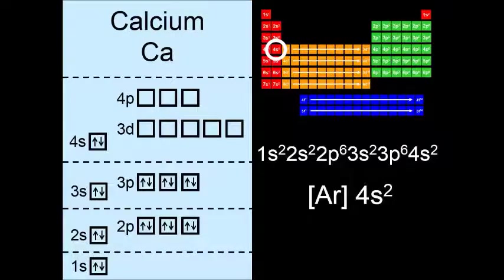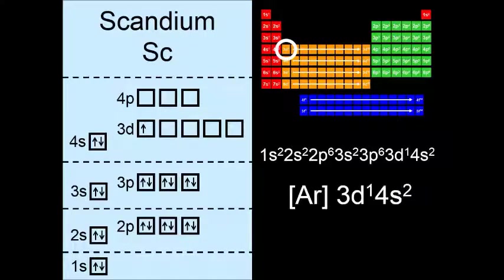And now beginning with scandium and continuing up to zinc, we'll put electrons into the 3d sublevel. So this is scandium. And you'll notice that I write 3d1 4s2.